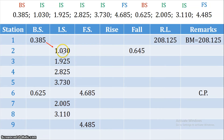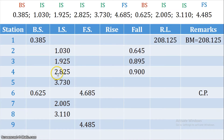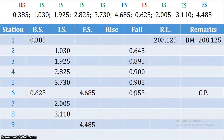Continuing: 1.030 minus 1.925 gives a fall value. Then 1.925 minus 2.825 gives a fall. Then 2.825 minus 3.730 gives a fall. Then 3.730 minus 4.685 gives a fall. Since this is a downward sloping case, all differences go in the fall column.